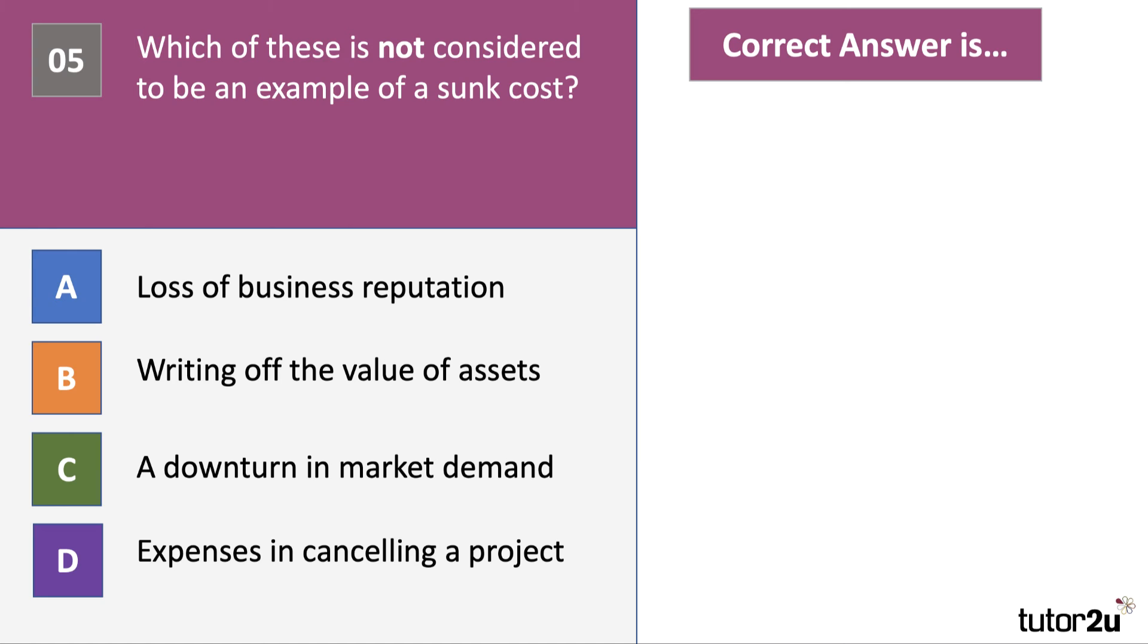Well the answer is C. All of the others are sunk costs. The loss of business reputation, you might leave your customers in the lurch if they can't get replacement parts and things, having already previously bought your product. Writing off the value of assets is where you have to have a fire sale of maybe specific items of capital equipment and you have to write off their value.